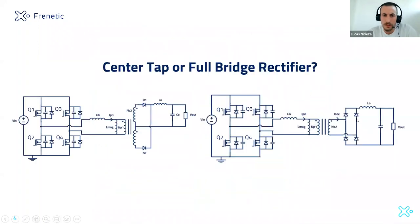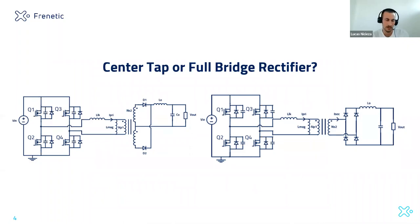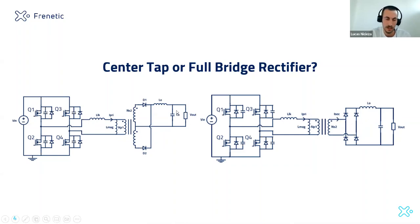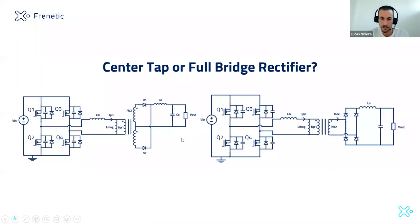The first decision is: do we want a center tap or a full-bridge rectifier on the secondary side? It depends on the current and voltage you have at the secondary side. With the center tap, you have fewer components — cheaper — and the voltage drop is half that of the full-bridge, because in the full-bridge you have two diodes. On the other hand, the peak inverse voltage in the diodes will be double that of the full-bridge.